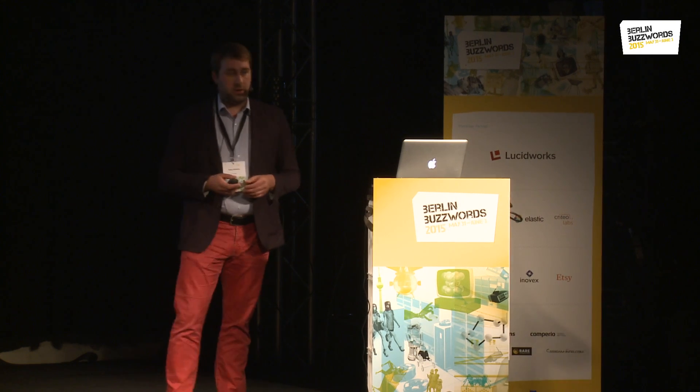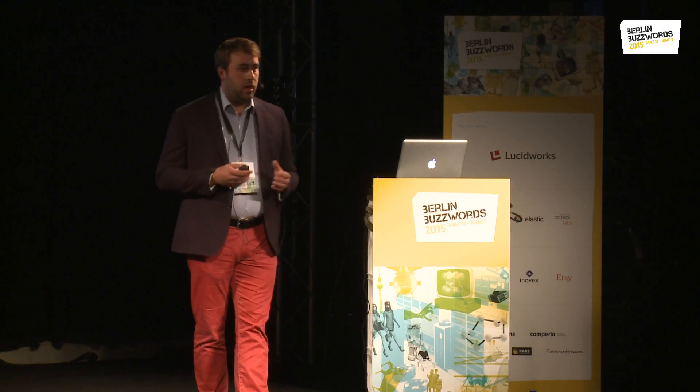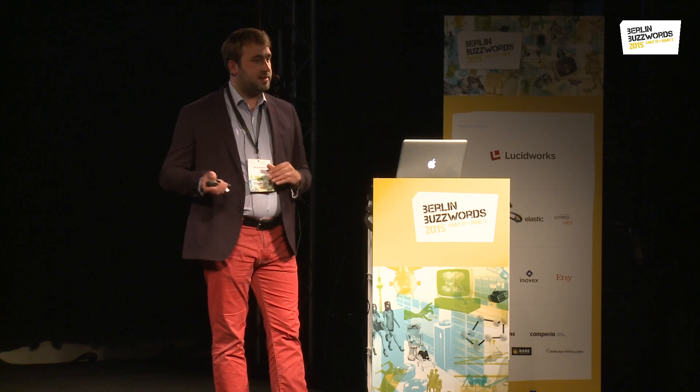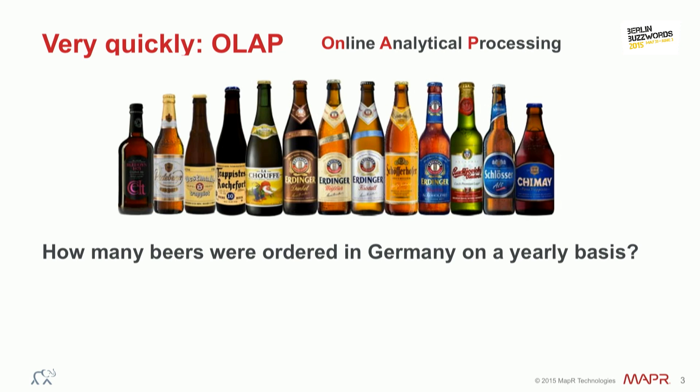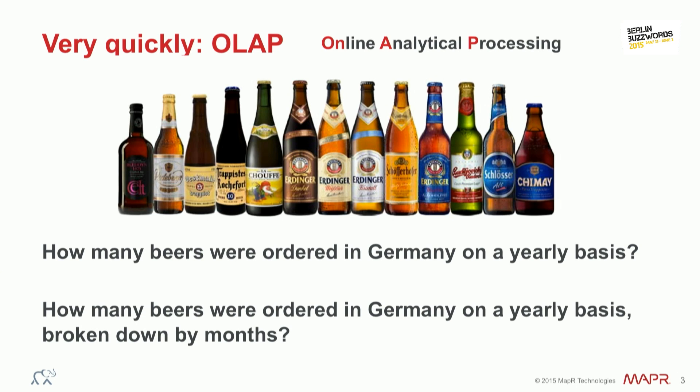OLAP stands for Online Analytical Processing. To give you one example — one could say it's about beer. It's about a question like: how many beers were ordered in Germany on a yearly basis? Or to be even more specific, how many beers were ordered in Germany on a yearly basis broken down by month? These are questions that everybody wants to answer in retail, business analytics, and business intelligence. Germans drink beer — how much do they drink, when do they drink it, where do they drink it?